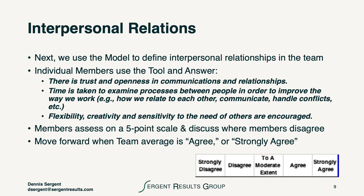With respect to interpersonal relations, we use the same methodology. It's on a scale of one to five from strongly disagree to strongly agree. We ask every individual team member to use the tool and answer: there's trust and openness in communications and relationships; time is taken to examine processes between people in order to improve the way we work; and flexibility, creativity, and sensitivity to the needs of others are encouraged. After we have a discussion about where we're at individually, we move forward when the team average is agree or strongly agree.